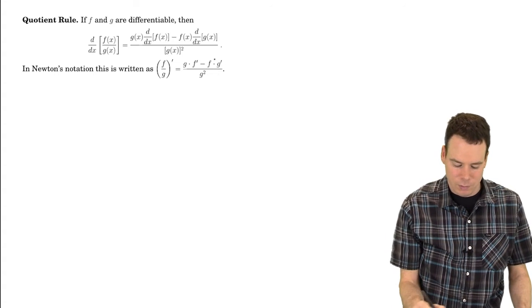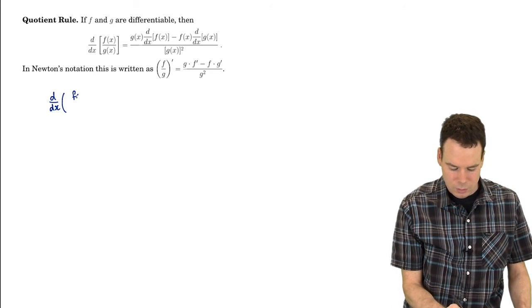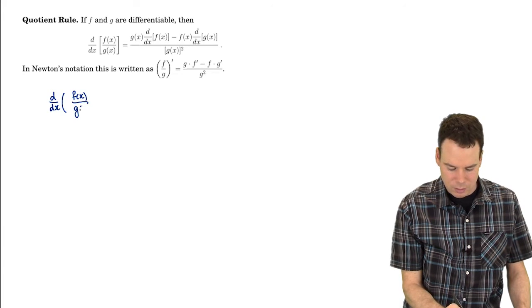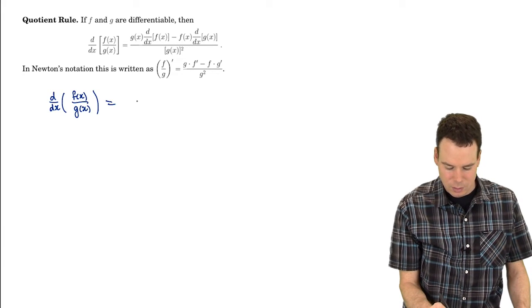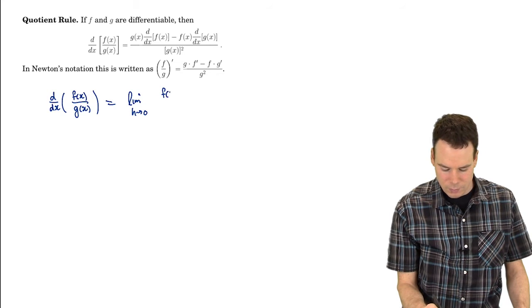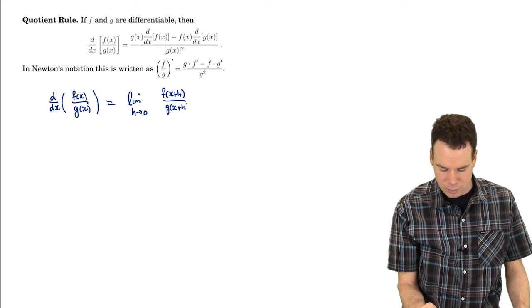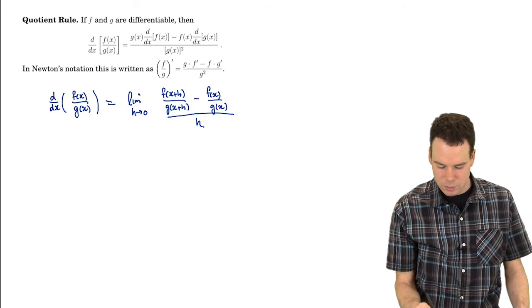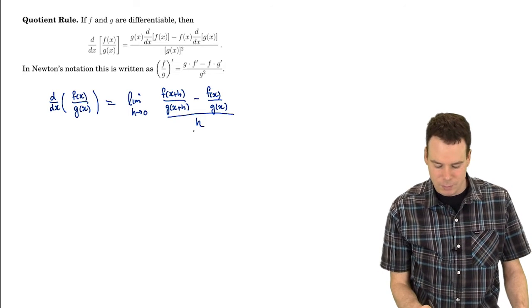We have to tie this back to the definition of derivative. So what that means is I need to work out the value of the limit which gives this derivative. So it's the limit as h goes to 0 of f of x plus h all over g of x plus h minus f of x all over g of x all over h. I'm going to have to work out the value of this limit.